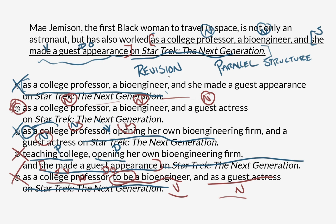When you're looking at a revision-style question and you see a list, one of the things you can do is determine whether or not the items of that list are all of the same type. Are they all nouns? Are they all verbs? If they're all verbs, are they all conjugated the same way? If they aren't consistent, it's probably a parallel structure issue, and finding the answer choice that resolves the error is the answer you want.